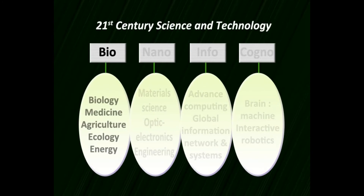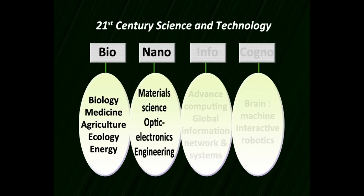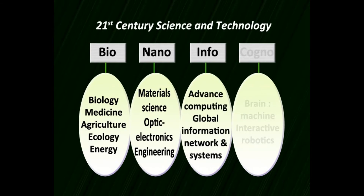The 21st century has bio options related to biology, medicine, agriculture, ecology, and energy; nano options of material science; optics, electronics, and engineering products; info products related to advanced computing and global information networks; and cogno products in terms of brain machines and interactive robots. The 21st century is a total era of knowledge impacting human use. Economic growth is directly proportional to the knowledge levels of the host population, and technology will be a failure if the population is uneducated.